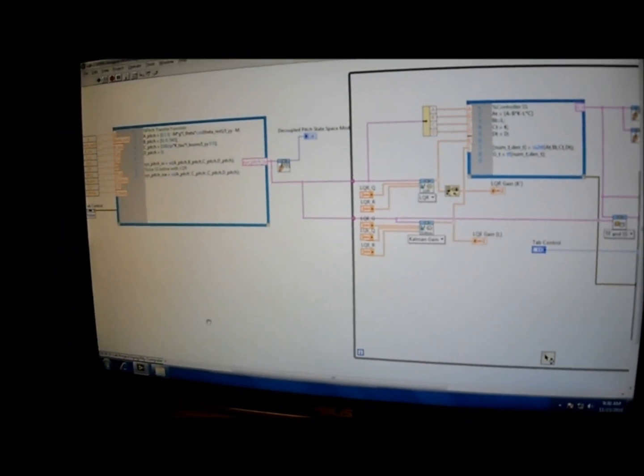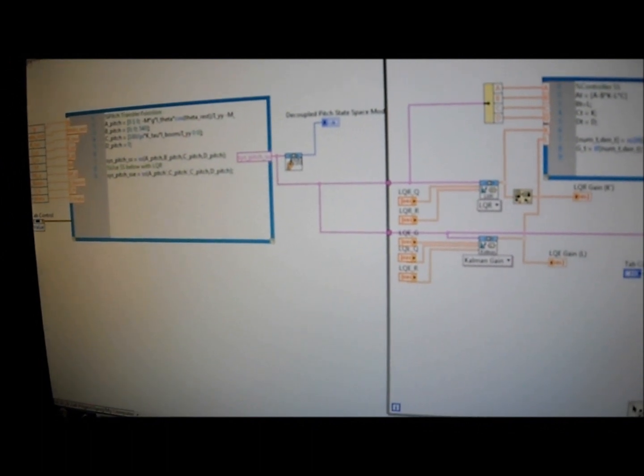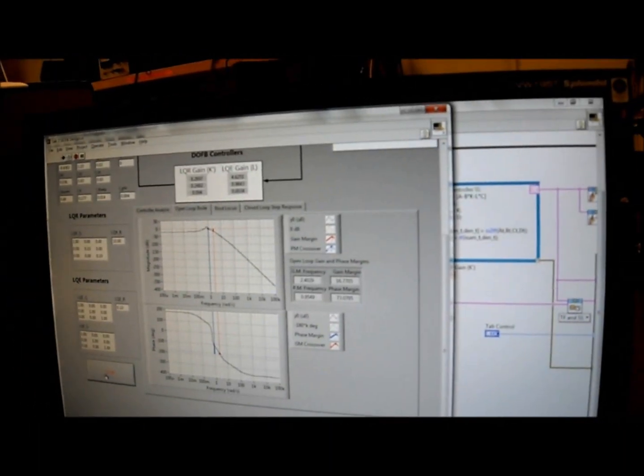But if they actually wanted to go in and design a different plant entirely, then all they have to do is just go into this node, change those matrices, and then whatever the system pitch is that exits the node will be what's used for the LQR system.